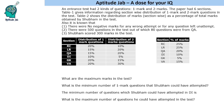Welcome to Aptitude Jab. This problem states that an entrance test had two kinds of questions: one-mark and two-mark questions. There are six sections, and the first table gives the section-wise distribution of one-mark and two-mark questions. The second table gives the distribution of marks as a percentage of total marks obtained by Shubham. There was no negative marking. There were 500 questions in the test, out of which 80 were from QA. Shubham scored 300 marks in the test.